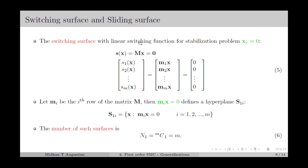In the case of a linear switching function, s(x) equals M times x minus xr. For a stabilization problem where xr equals 0, the switching surface is given in equation number 5 as s(x) equal to M times x equal to 0, with M sliding variables corresponding to each control input. Let mi be the i-th row of the matrix M; then mi times x equal to 0 defines a hyperplane denoted S1i. The total number of such first-order surfaces is n1, equal to MC1, which equals M.